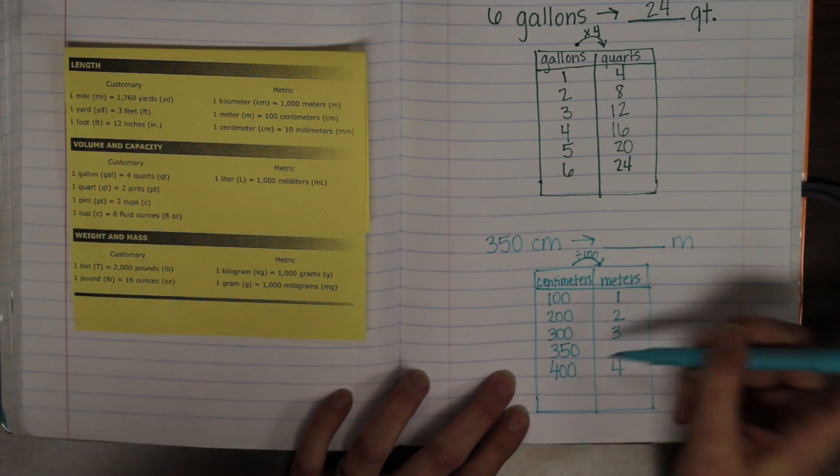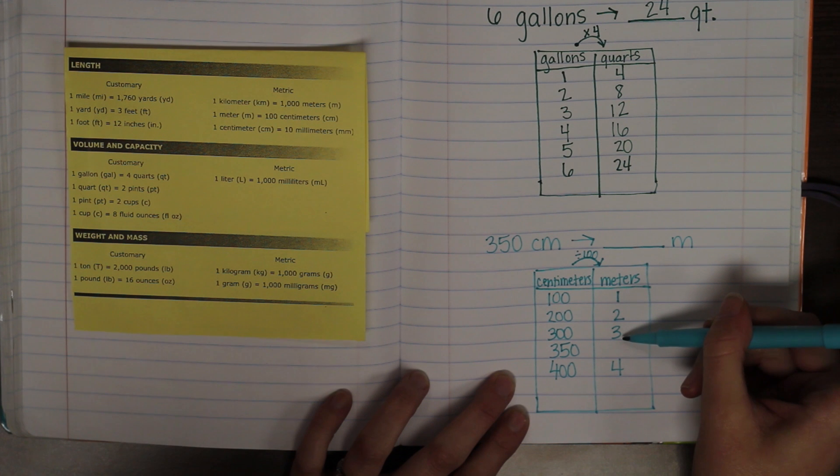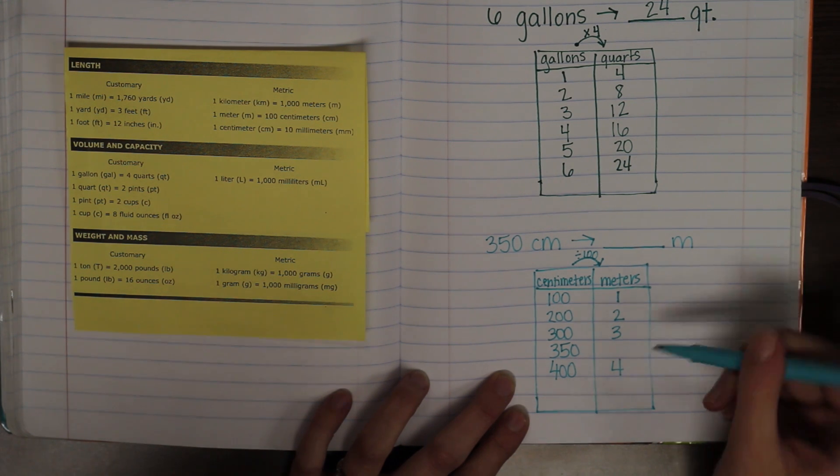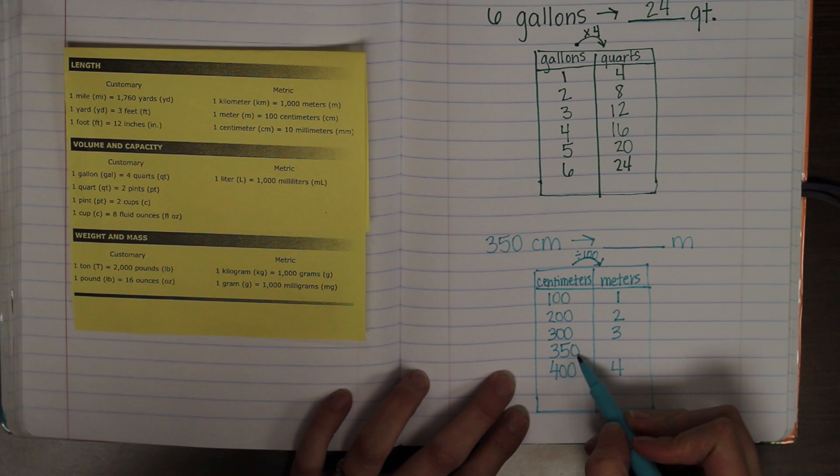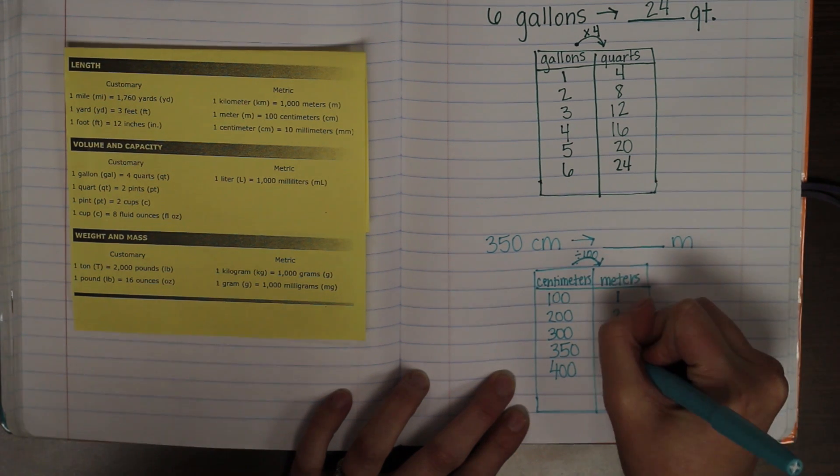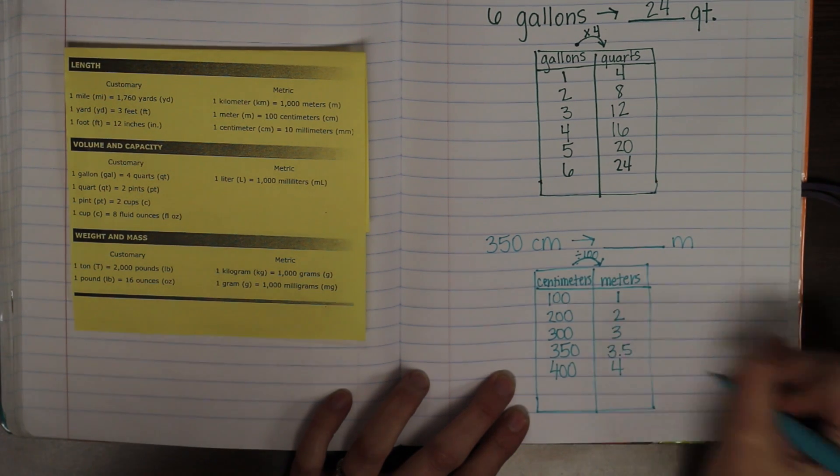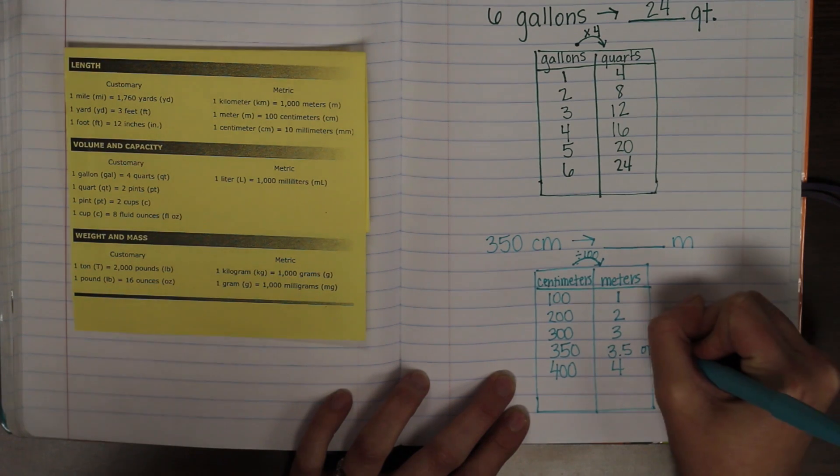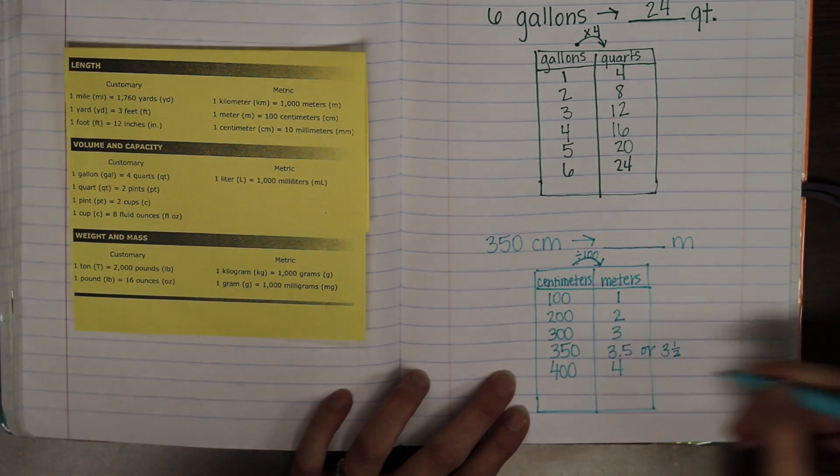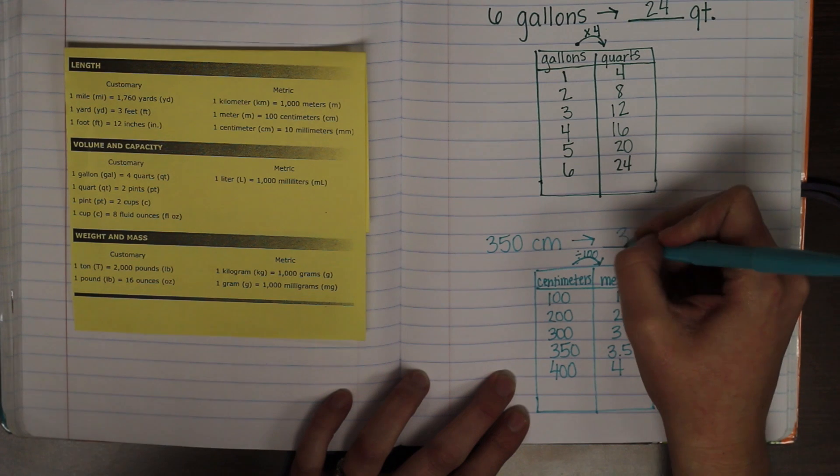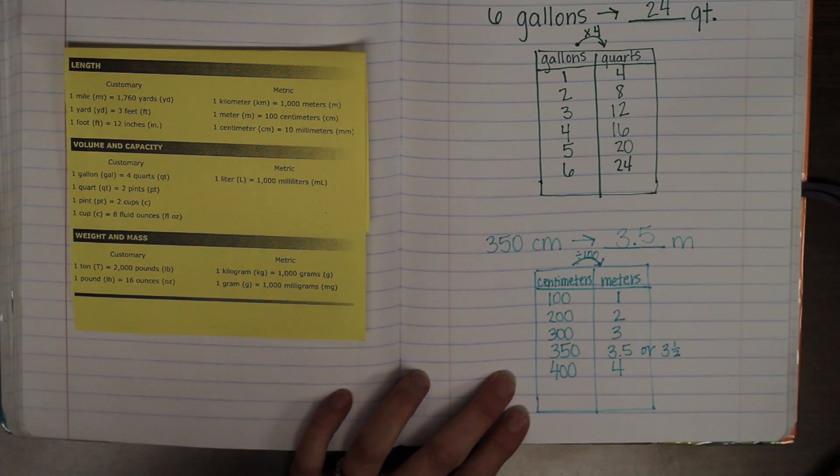Okay. Right in the middle of three and four hundred, I am going to find what is exactly in the middle of three and four. Or three hundred and fifty divided by a hundred, which is three point five or three and a half. However you want to write it. Three and a half meters.